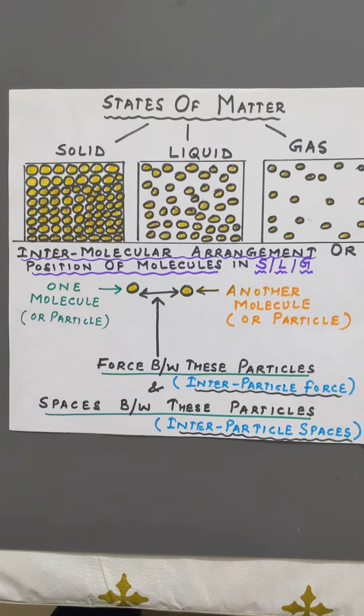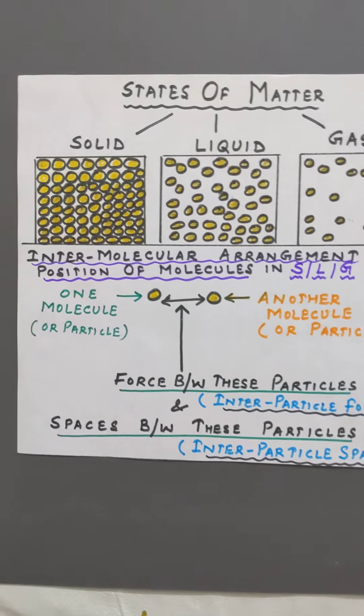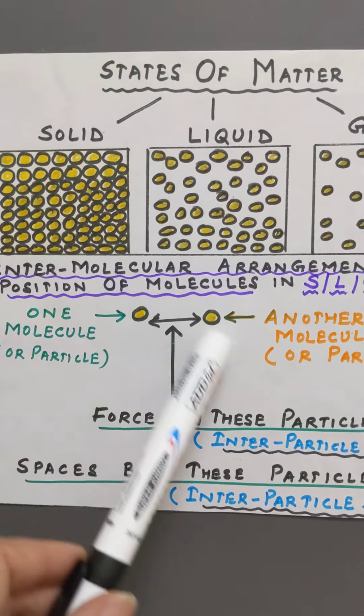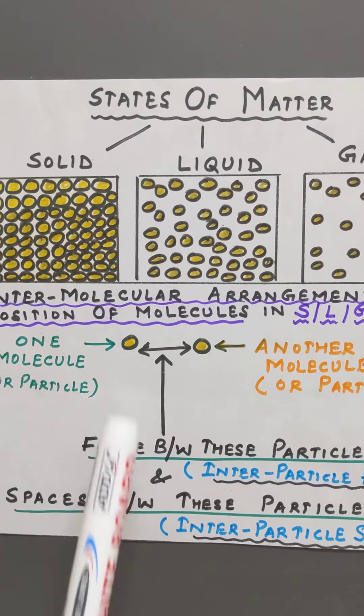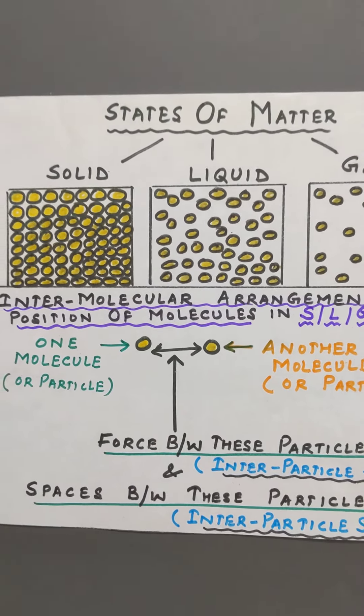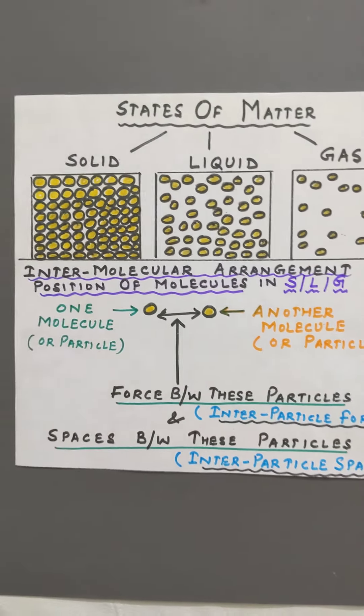So from this we also come to know that if we have two particles, A and B, the space between them is the inter-particle space and the force of attraction between these two particles is known as the inter-particle force of attraction.